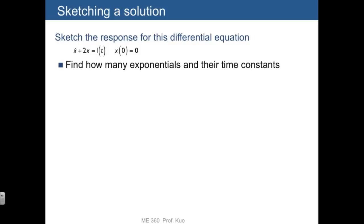And we note immediately that s equals negative 2, or tau is equal to 1 half. And there's only one exponential.